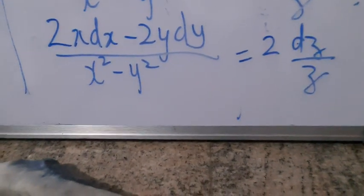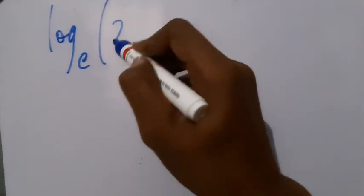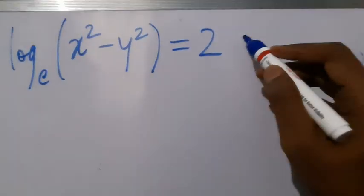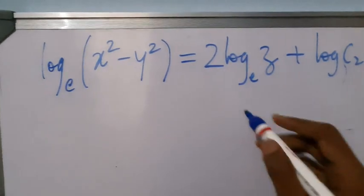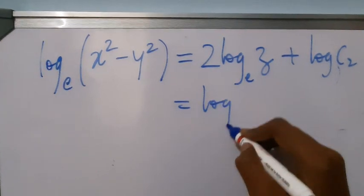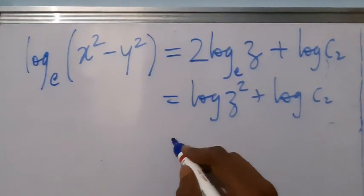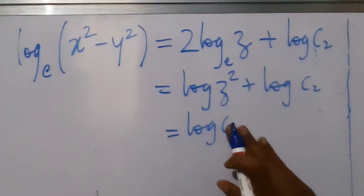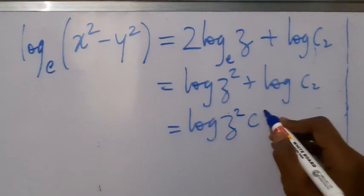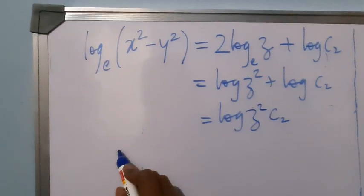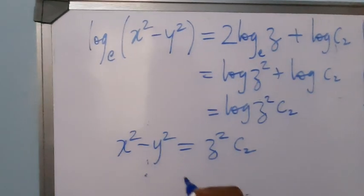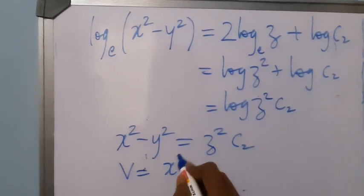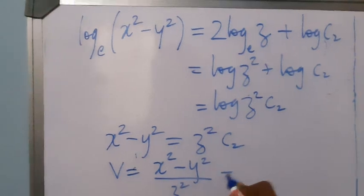Integrating, we get log(x²-y²) equal to 2·log(z) plus log(C2), which simplifies to log(x²-y²) equal to log(z²·C2). Eliminating the logarithm, we have x²-y² equal to C2·z², so V equal to (x²-y²)/z².